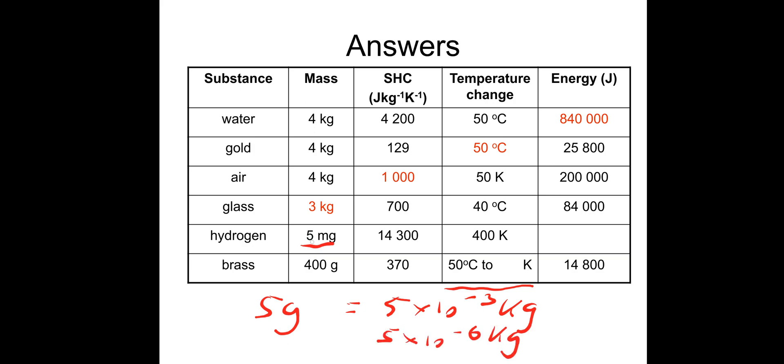We've got 5 milligrams, so 5 milligrams is actually 5 × 10⁻⁶ kilograms. This is a common mistake to make, converting this incorrectly. Let's see how you get on. Hydrogen: you should get 28.6 joules of energy. And brass to finish off: 423 Kelvin. Hopefully that all went okay.